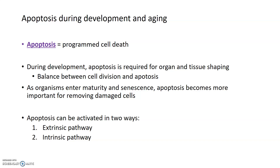Apoptosis is a programmed form of cell death. It's used to get rid of dead or damaged cells, as well as to reverse an immune response after B cells are made in response to a pathogenic invader. During development, apoptosis is usually required for organ and tissue shaping — in particular, the cells that normally exist between the fingers and toes. Those webs exist in embryonic development, and apoptosis is responsible for the death of the cells making up these webs so that we have separated digits on our hands and feet.